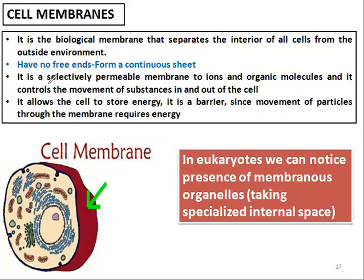But it is permeable. The cell membrane is permeable to ions, organic molecules, anything that the cell needs, and everything that the cell doesn't need is pushed outside. The cell membrane also allows the cell to store energy. It is a barrier since the movement of particles through the membrane requires energy.